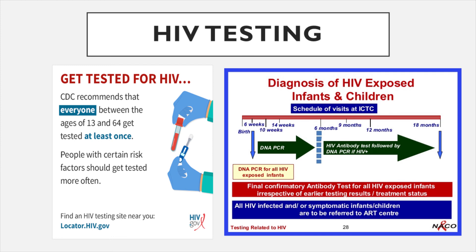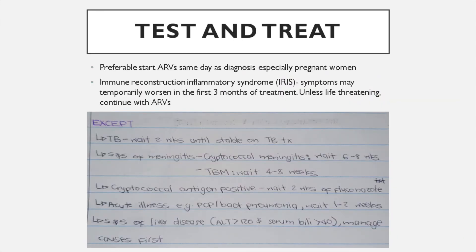For infants born to HIV-positive mothers — who will be on treatment during pregnancy to prevent transmission — a PCR test is done at birth, six weeks, ten weeks, sometimes fourteen weeks, six months, and six weeks after breastfeeding stops. Testing continues at nine months, twelve months, and at eighteen months the child can have the rapid HIV test used for normal adults. When tested positive, the test-and-treat approach is used — start ARVs the same day, especially for pregnant women to avoid transmission to the child.